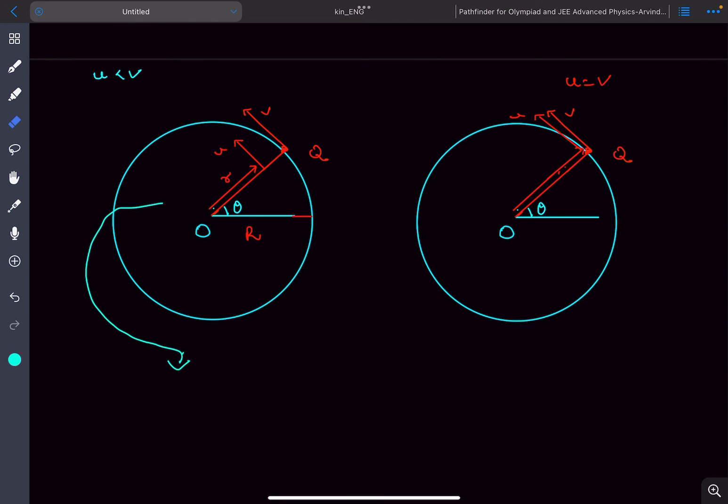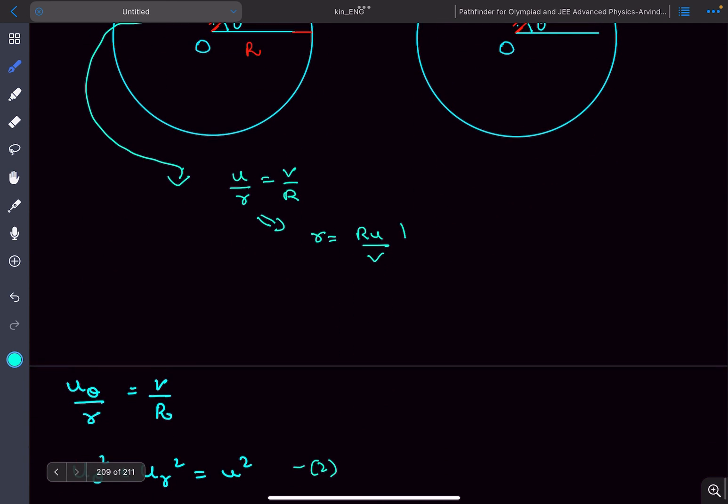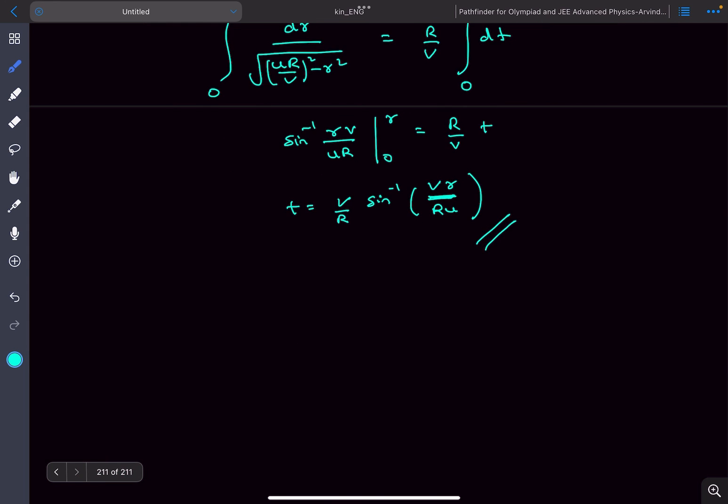In option (a) they have also asked how long will it take to reach that path. So if we're writing for this case, we can equate the omegas. So u divided by small r would be v divided by capital R. From here we'll get the final radius of the path to be capital R times u divided by v. Now if we substitute this value of radius into our equation here...